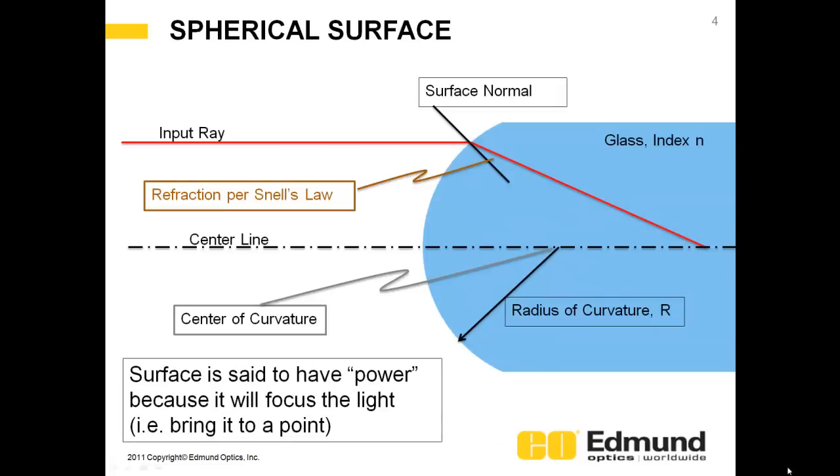So I'm going to step back a little bit and just discuss a simple spherical surface. So here we've got a piece of glass, and it's polished on the end of it, a spherical surface. So we have an input ray coming in. It's parallel to this center line which goes through the center of curvature. This surface has a radius of curvature here, R.